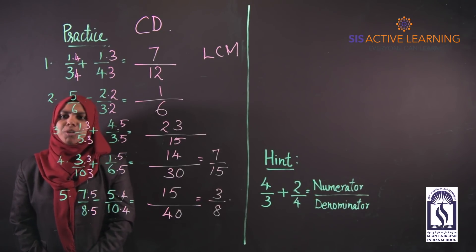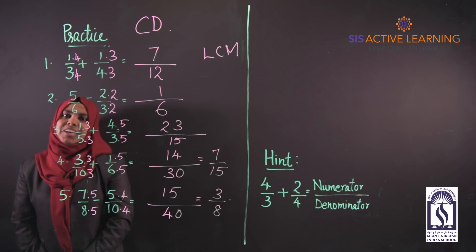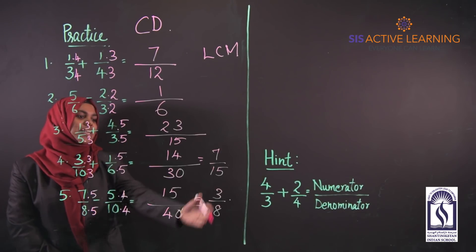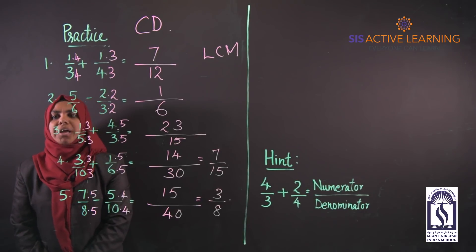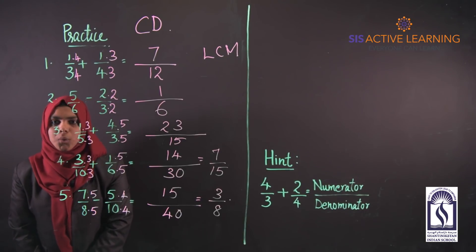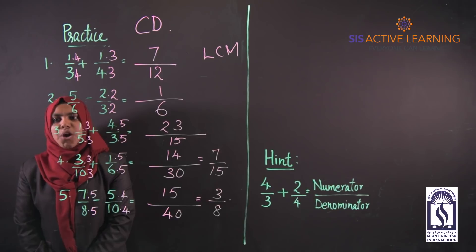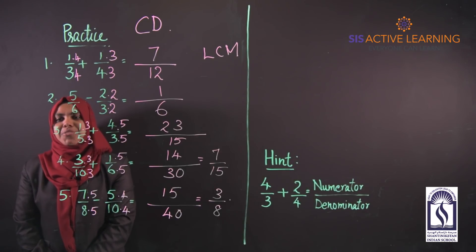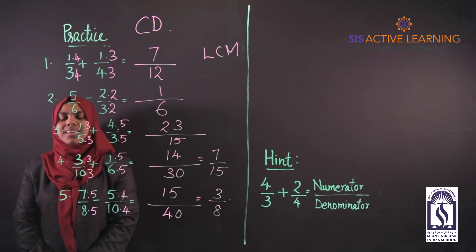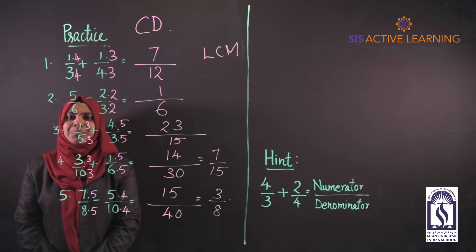Let me ask you a simple question: when was the great mathematician Ramanujan born? Here is your hint — solve 4/3 + 2/4. The numerator of the answer is the day of his birth and the denominator is the month of his birth. If you get the answer, please write it as a comment. Thank you!